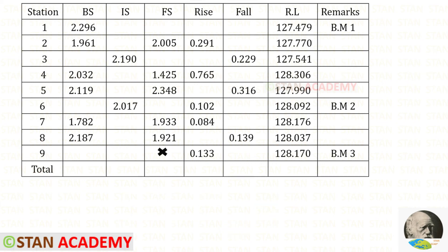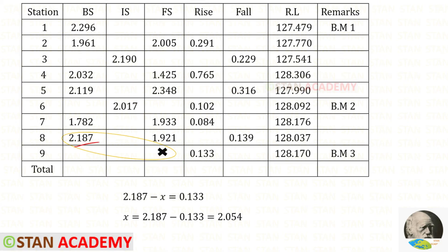Let us enter that. Now we need to take from this back sight to this fore sight. This minus this, we will get a positive value because it is rise. For x, we will get 2.054. Let us enter that.